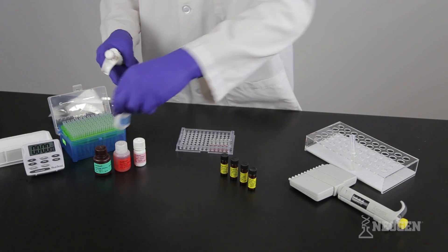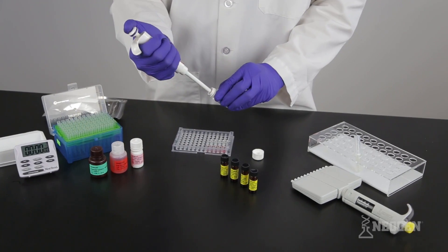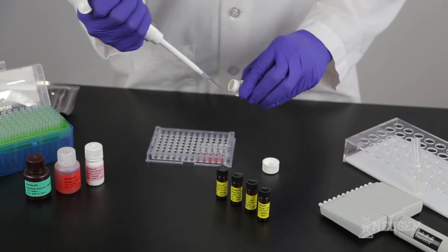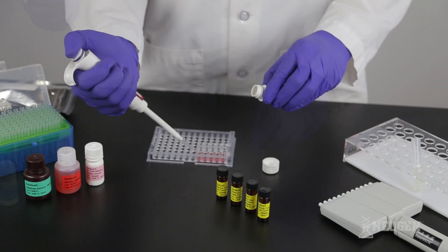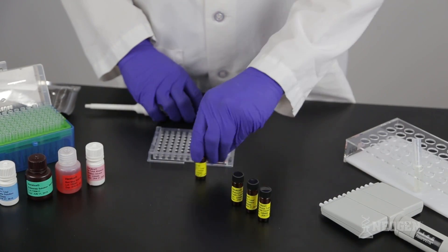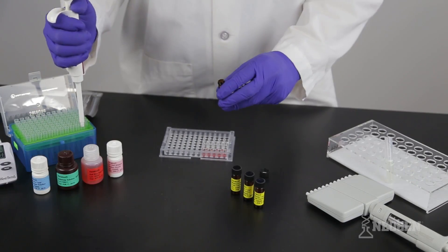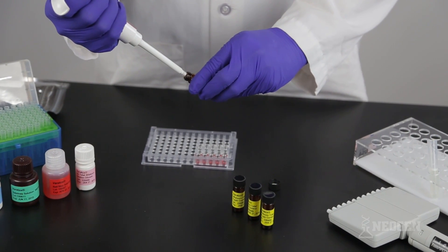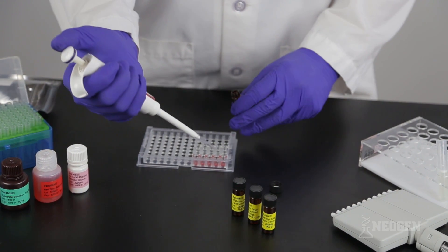Using the 100 microliter pipetter and a new tip, prime and pipette 100 microliters of conjugate into each red marked well. Gently swirl each reagent prior to use. Using a new pipette tip, prime and pipette 100 microliters of the zero control into the first red marked well.